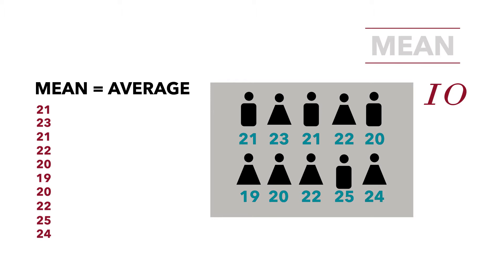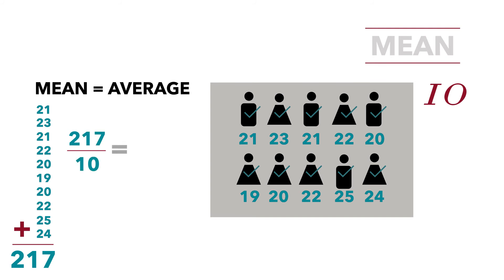Those are our ten observations. To calculate the mean, we add those up and divide by the number. So: 21 + 23 + 21 + 22 + 20 + 19 + 20 + 22 + 25 + 24 equals 217. We have a total of 10 observations. So 217 divided by 10 equals 21.7. The mean age for this statistics class is 21.7 years of age.